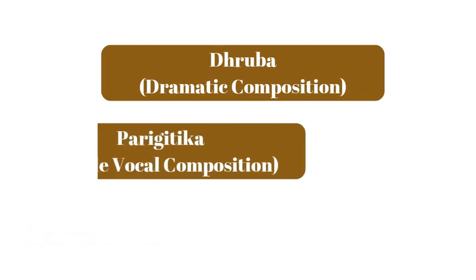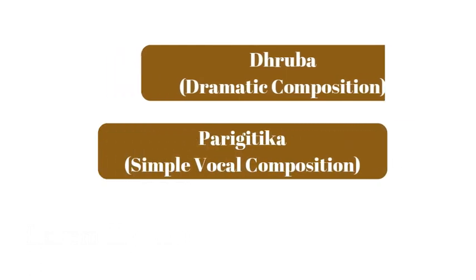And lastly, Uparaga — I told you Uparaga is nothing but semi-raga, not a perfectly complete raga. These melodies, whether Jatis or Ragas, were used in the compositions of Gandharva songs. There are two types: one type is known as Dhruva, which means dramatic songs, and the other is known as Parigitika. Parigitika were simple vocal compositions.